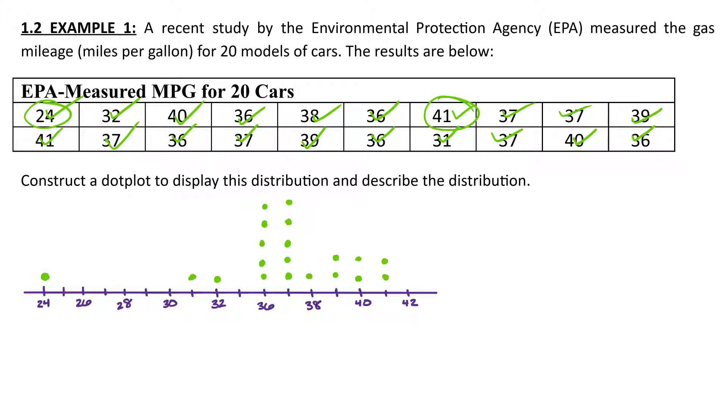So once you've completed all the dots, your dot plot should look like this. The only thing we're missing, which we would definitely lose points for, is our label. So on the horizontal axis, we're going to label this the gas mileage. And because we have units, we want to add that too. So this will say is miles per gallon.